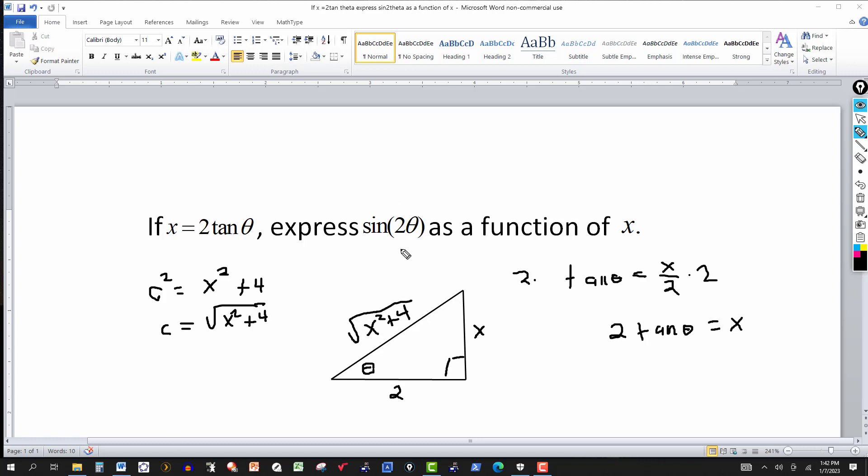So now I want an expression for sine of 2 theta. I want sine of 2 theta as a function of x. Now here we're given theta. Tangent of theta is x over 2. So let's rewrite this in terms of just a single angle of theta.